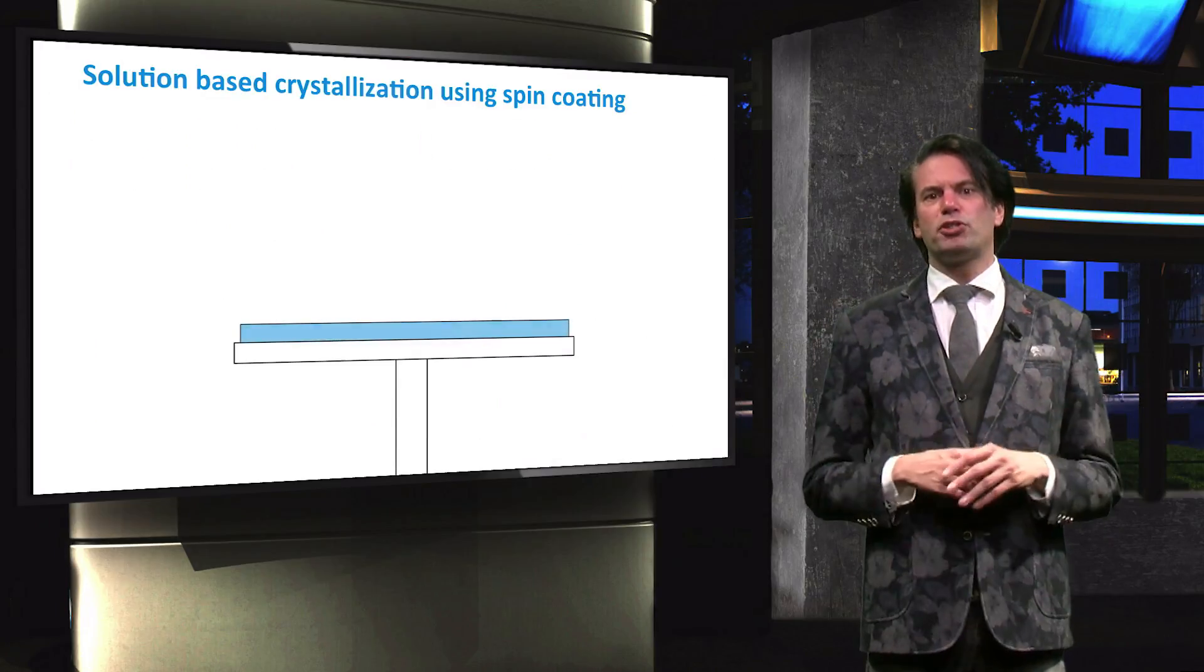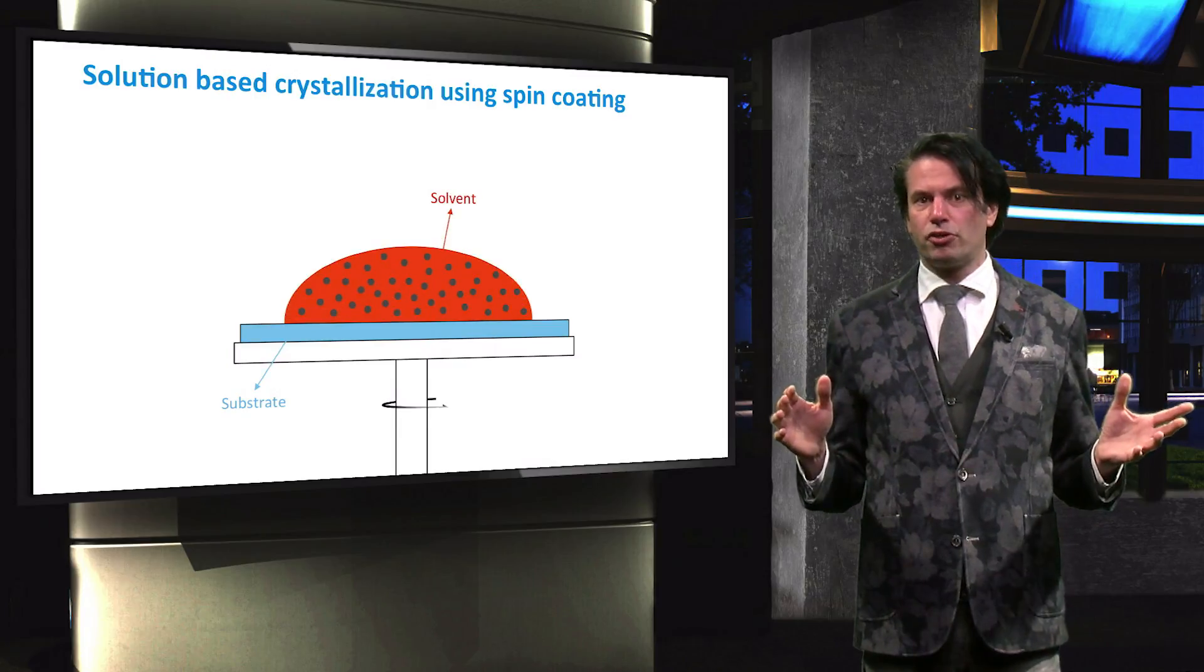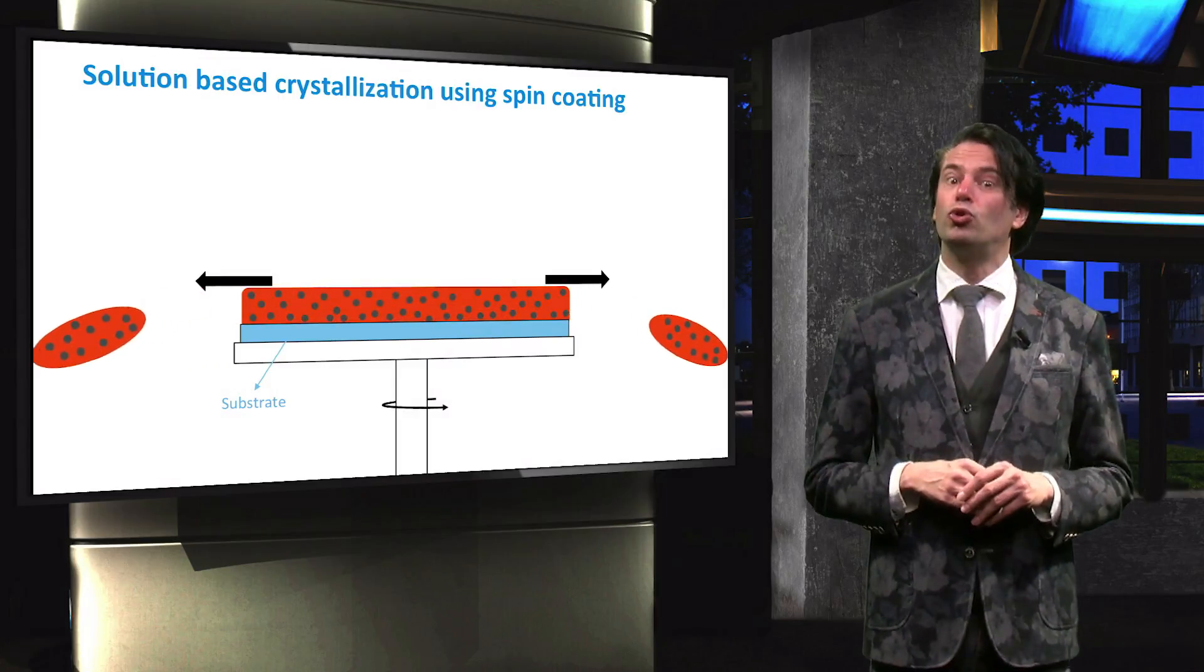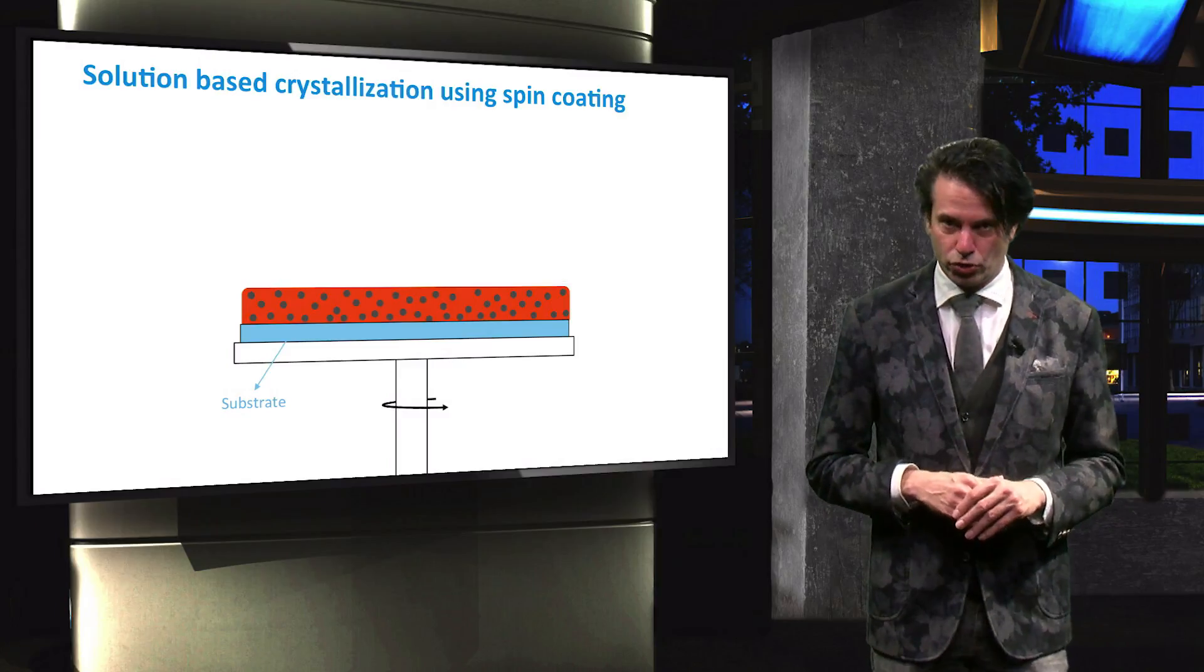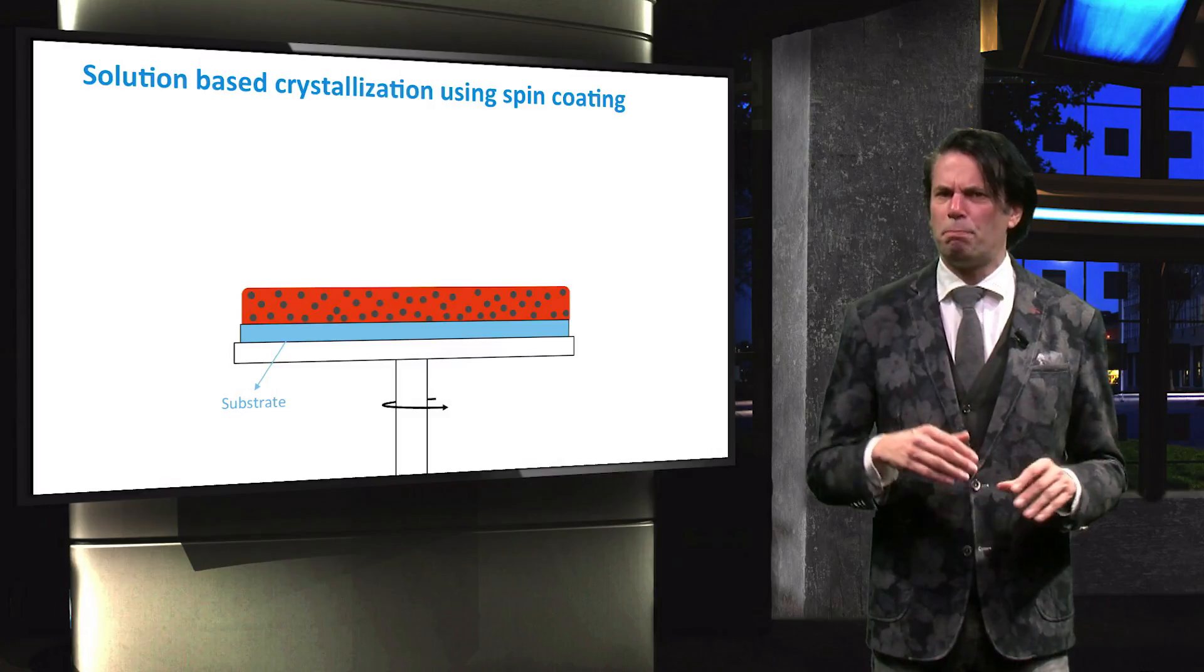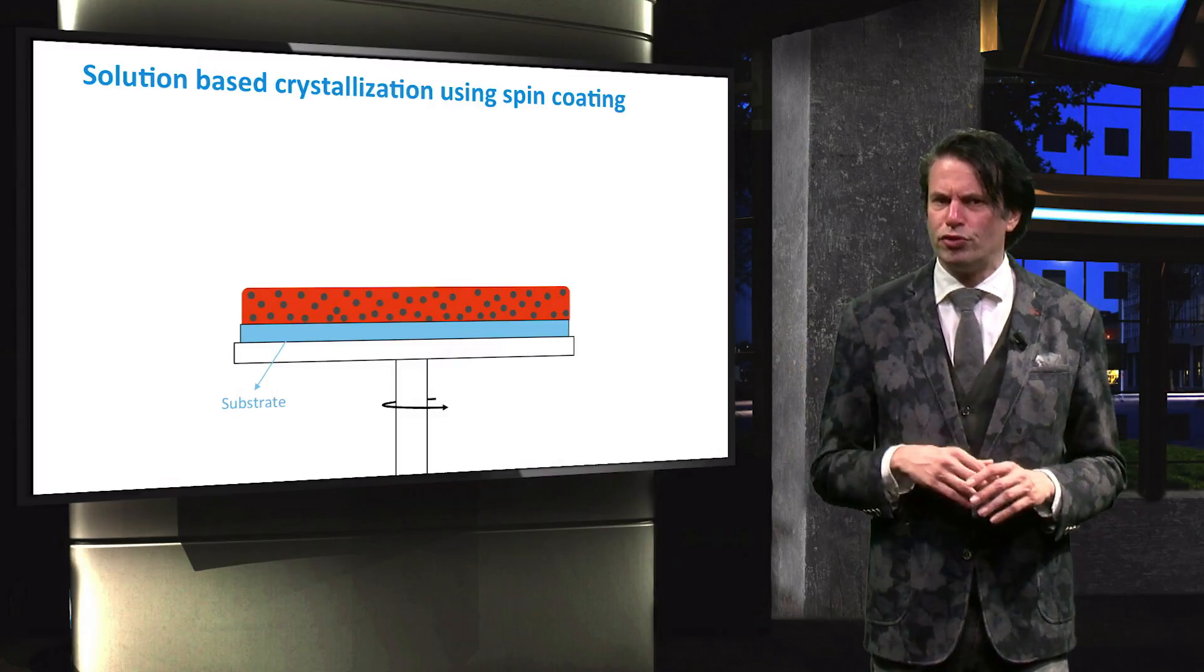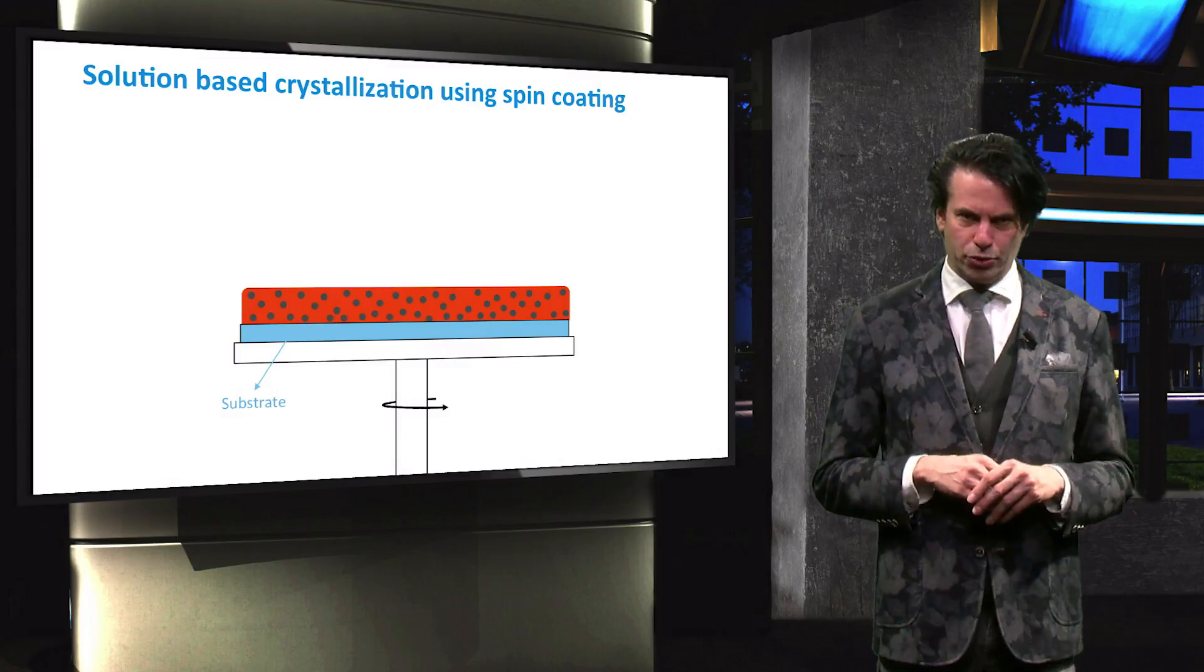Perovskites can be deposited using several processing methods. Various deposition technologies can result in high quality perovskite films. The method most explored is solution-based crystallization, using spin coating of a precursor solution. Processing has been further developed and post-treatments have been successfully applied in which anti-solvents of the ethyl ammonium lead iodide or an intermediate compound are used.